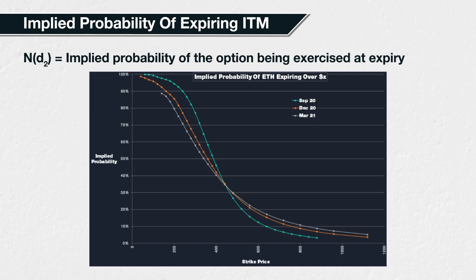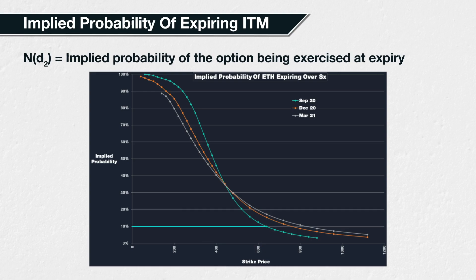This chart is using option prices for Ethereum from three different expiry dates: September 2020 in teal, December 2020 in orange, and March 2021 in grey. Ethereum was around $400 at the time. Let's use the $650 strike as an example. Here we can see in the September expiry, the $650 strike option is currently implying about a 10% chance of the underlying price being over $650 when the September options expire.